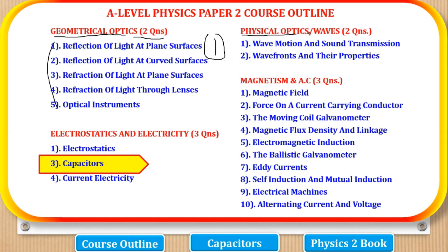The next part is physical optics or waves, and also here two questions come and a student is expected to answer one. So this one question here and one question here are compulsory. Then the next part is electrostatics and electricity, where three questions come from these topics, and another part is magnetism and AC or alternating current where three questions come from these topics.